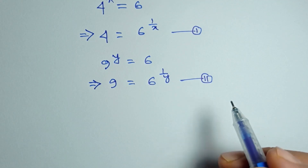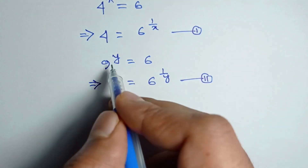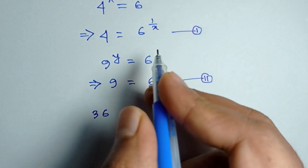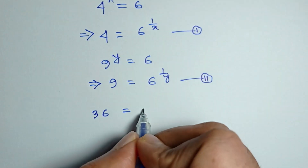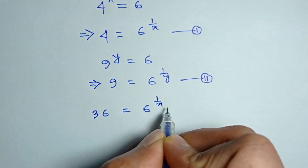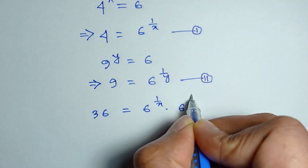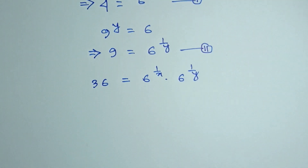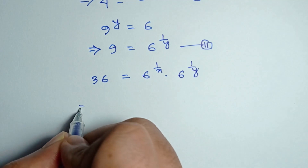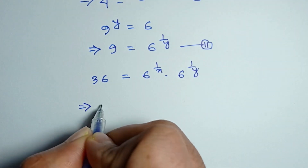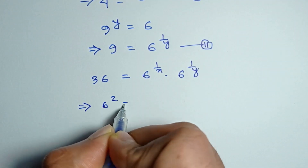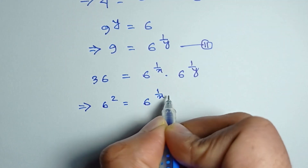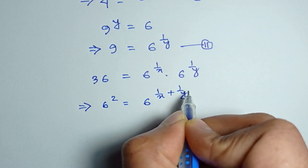If we multiply equation number 1 by equation number 2, we get 4 times 9 is equal to 36, which equals 6 to the power 1 by x times 6 to the power 1 by y. So 6 squared is equal to 6 to the power 1 by x plus 1 by y.